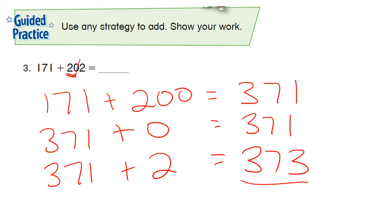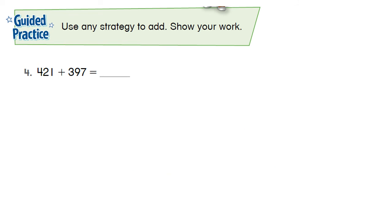Go ahead and pause here. Solve problem number four. When you're ready to check your work hit play. If you need some help hit play and I'll walk you through it, so pause now. Alright, number four: 421 plus 397. Now this one I'm looking at and I can see that 397 is really close to 400, so I'm going to make these numbers a little bit easier for me to use, so I'm going to use compensation.